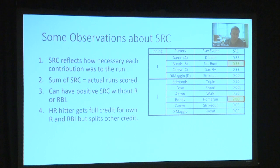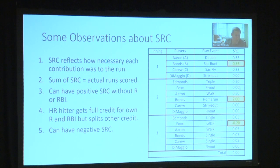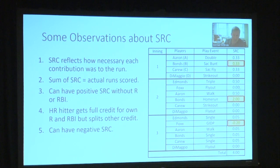So Barry Bonds hits a three-run homer scoring Edmonds and Aaron. Edmonds and Aaron each get half a credit for their own score. Bonds gets half a credit for each of those scores plus his own full credit, so he'll have a 2 SRC for that three-run homer. We can also have negative SRC. In the third inning example, no runs scored, but if you remove Fox from the lineup, you'd have a single, a walk, a single, and a single — which ought to score a run. But Fox grounds into a double play, preventing that run, so the Shapley value gives him blame.